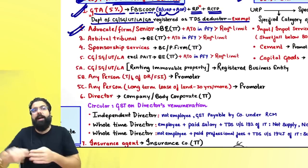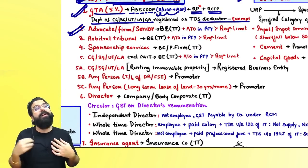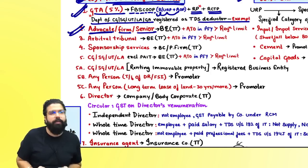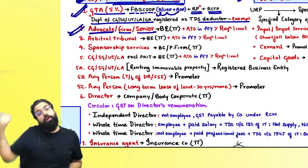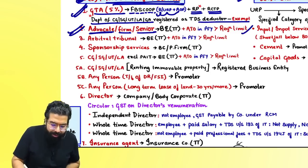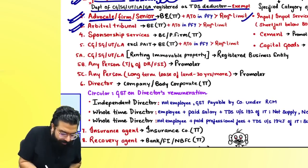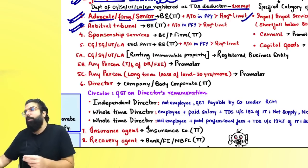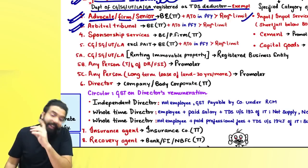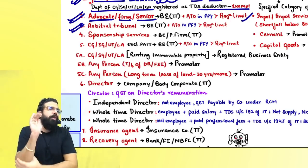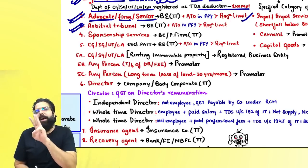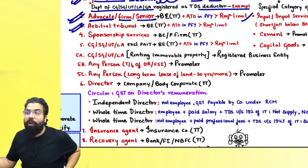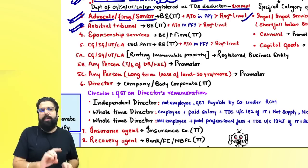If an advocate, senior advocate, or firm of advocates provides services to a business entity whose last year's turnover exceeds the registration limit, reverse charge mechanism applies — the business entity pays GST under RCM. Similarly, if an arbitral tribunal provides services to a business entity in the taxable territory whose last year's turnover exceeds the registration limit, RCM applies. Important: for advocate, senior advocate, firm of advocates, and arbitral tribunal, always check the last year's turnover, not the current year's turnover.